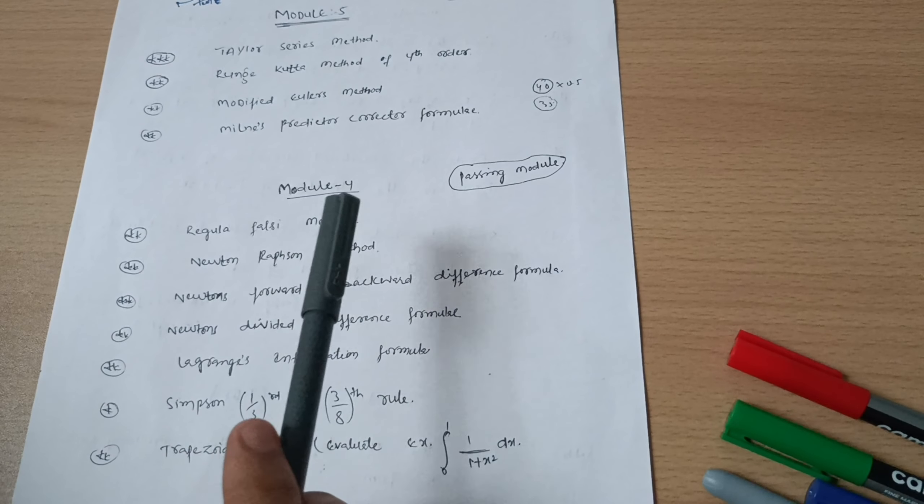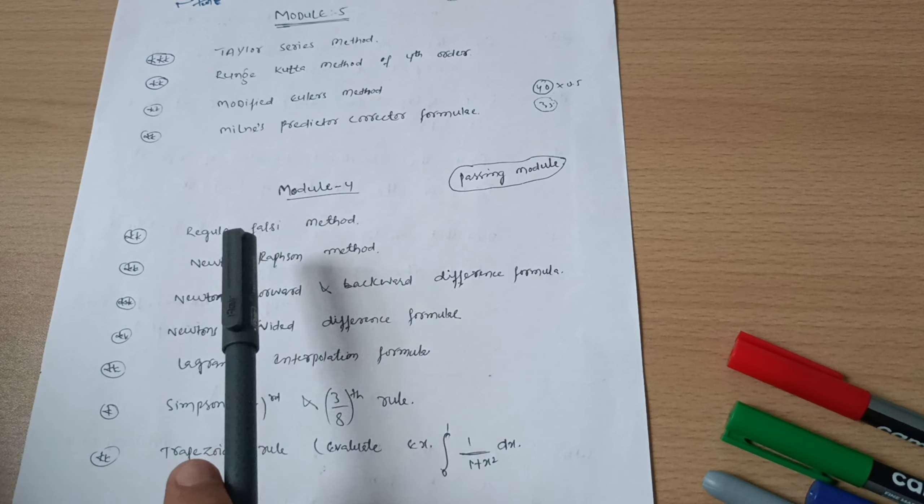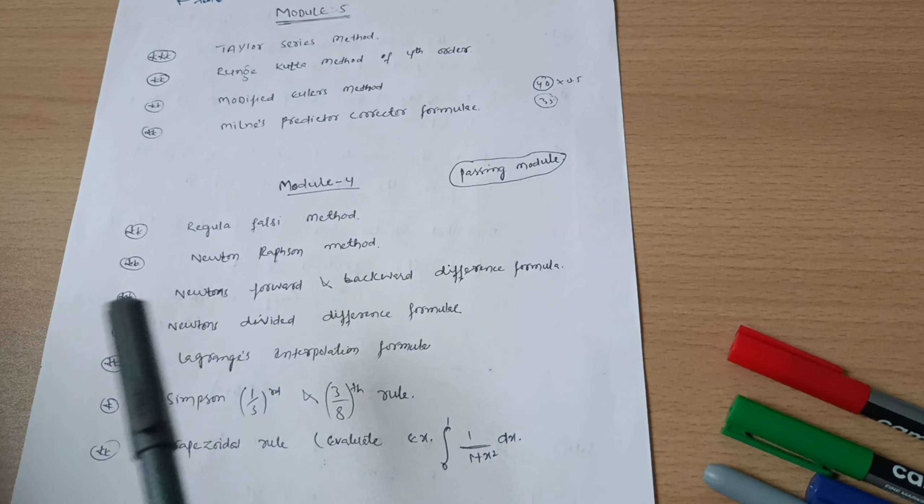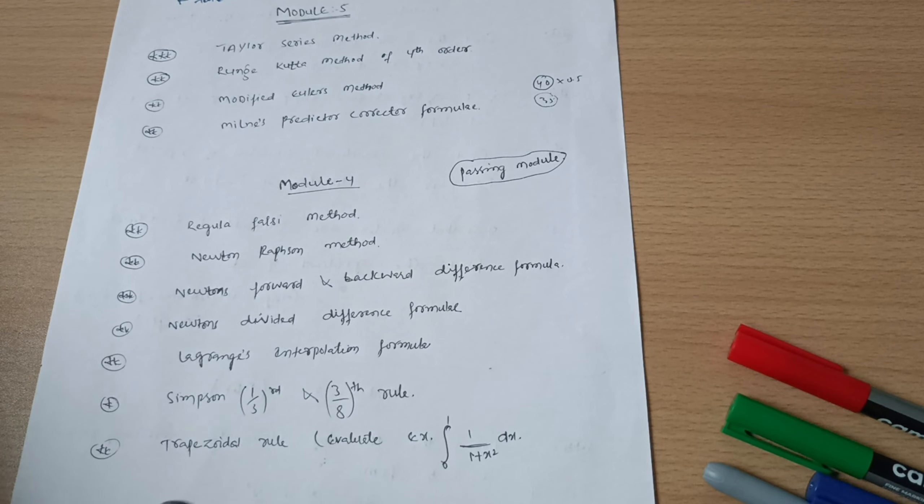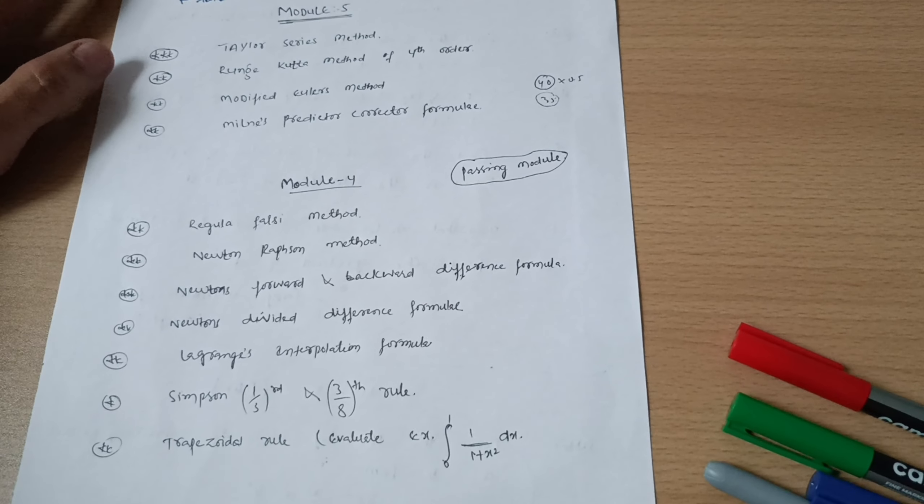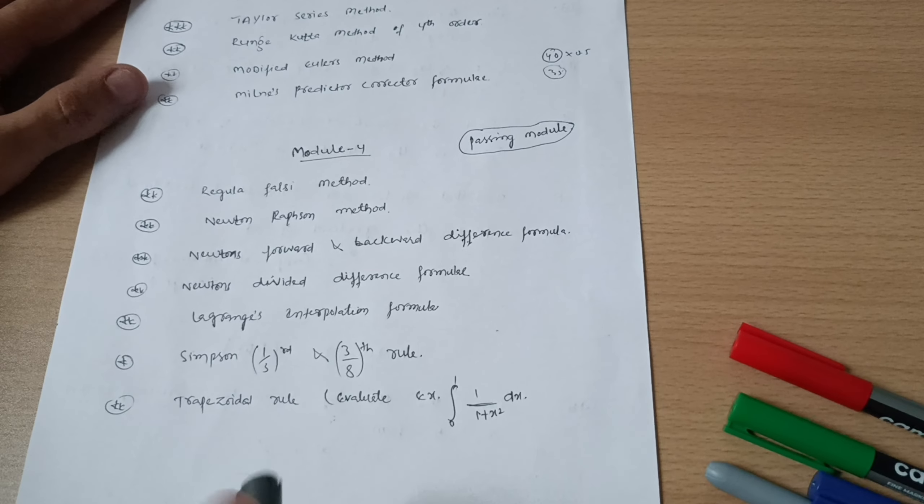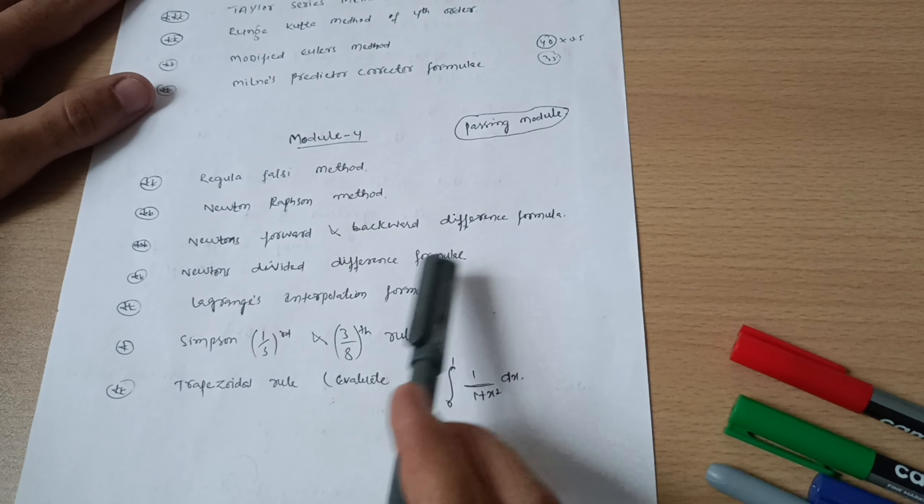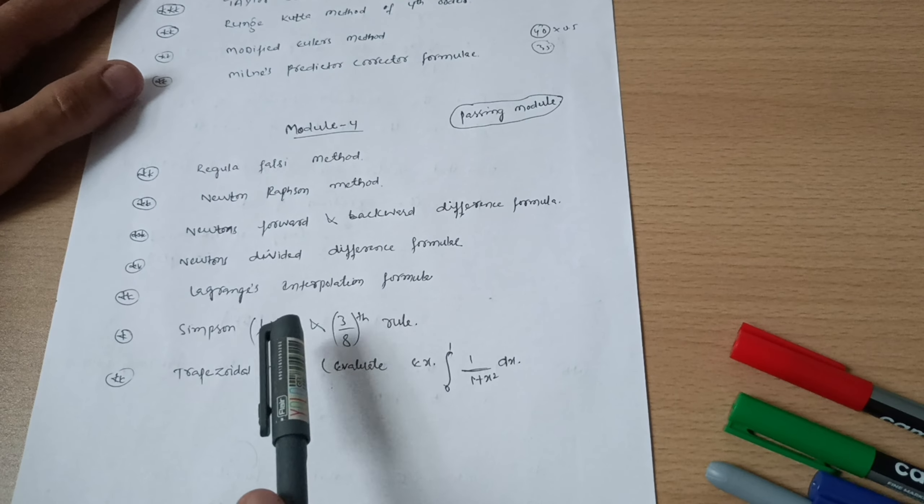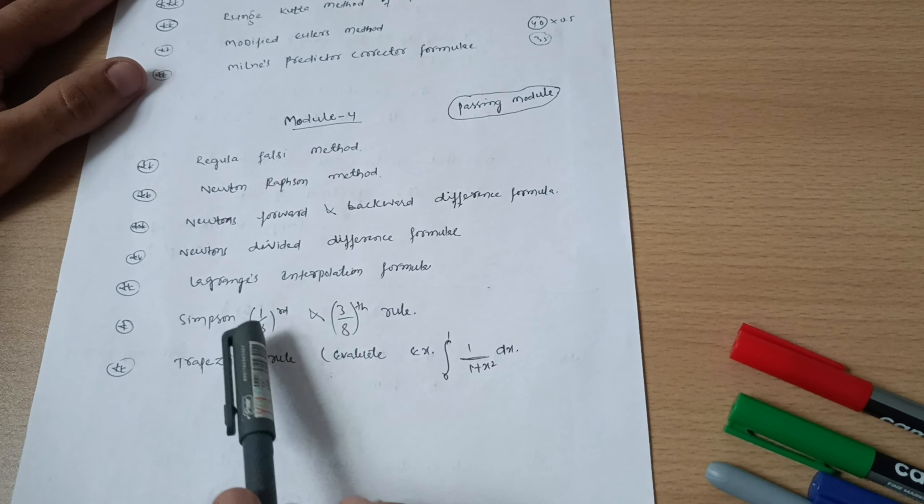As you might have heard, 18 scheme students are still struggling to pass the mathematics subject, but you are the luckiest batch. You are getting somehow simple mathematics in second semester. For 18 scheme, M2 was considered the toughest of the mathematics series. And you are also getting the handbook, so this will be a better option for you.